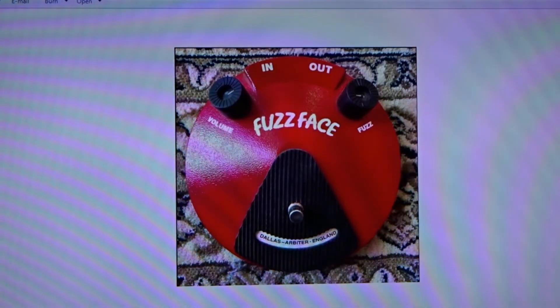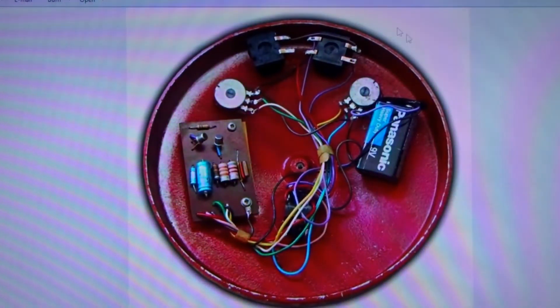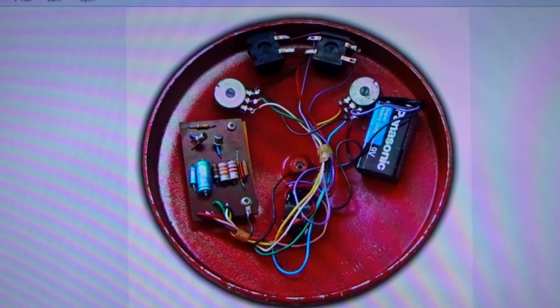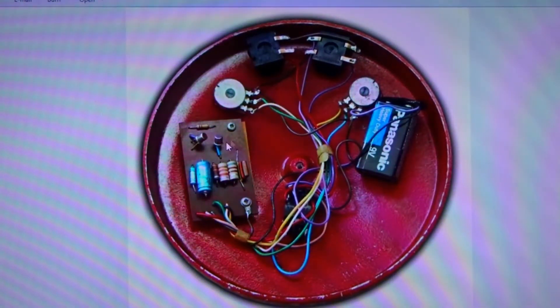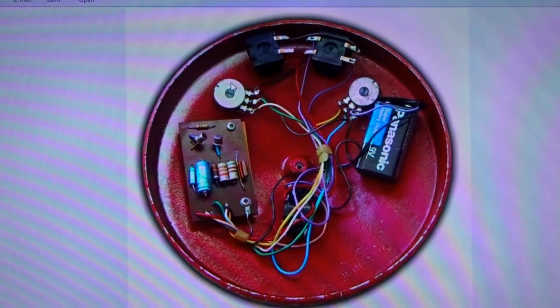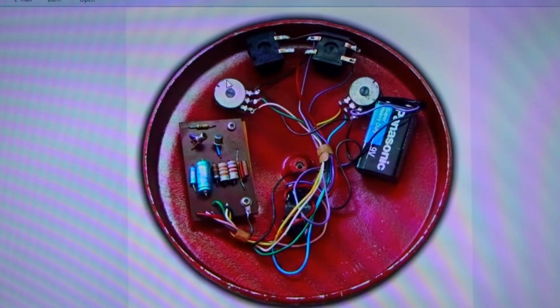So we flip it around and we have the insides over here. We got our circuit board right here, we got the fuzz trim pot just like on your guitar but this one is 1k, and this one over here, the volume, that's a 500k.